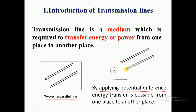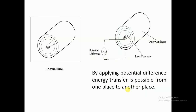Let us have another example. You can see here a coaxial wire. In this coaxial wire, one is the inner conductor and another is the outer conductor. If power transfer is necessary, we apply a voltage difference between the inner conductor and outer conductor, and power or energy can be transferred from one place to another.